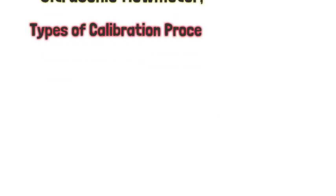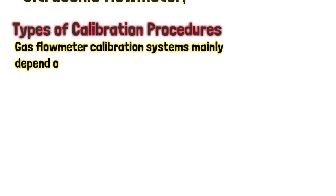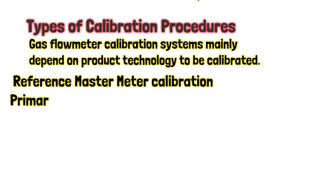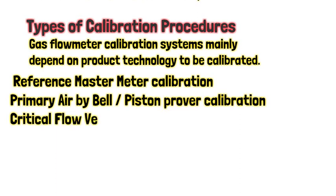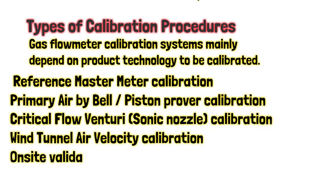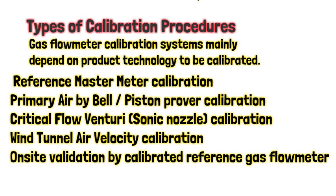There are different methods for calibration based on product design. Types of calibration procedures: gas flow meter calibration systems mainly depend on product technology to be calibrated — reference master meter calibration, primary air by Bell prover, piston prover calibration, critical flow venturi, sonic nozzle calibration, wind tunnel air velocity calibration, and on-site validation by calibrated reference gas flow meter.